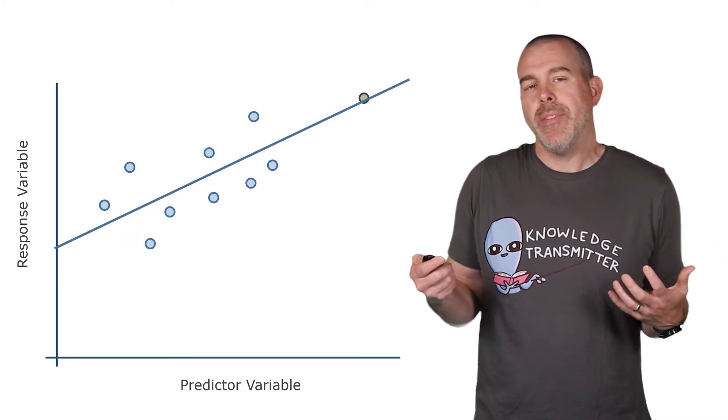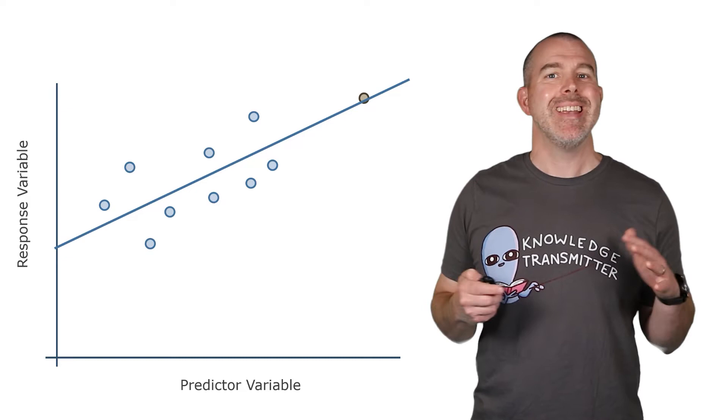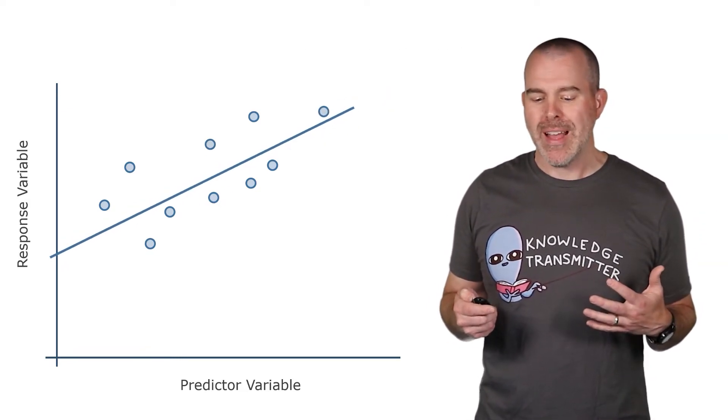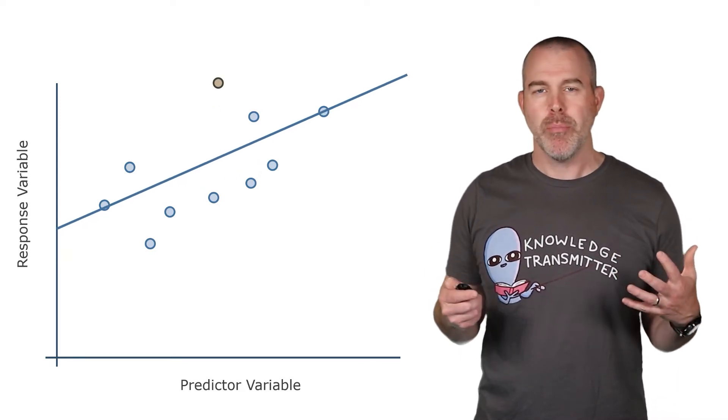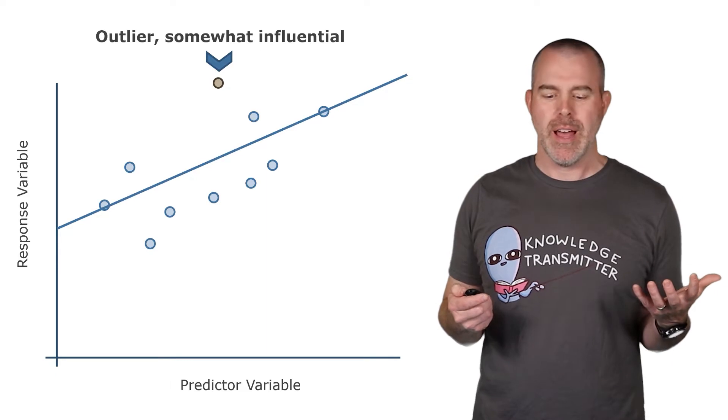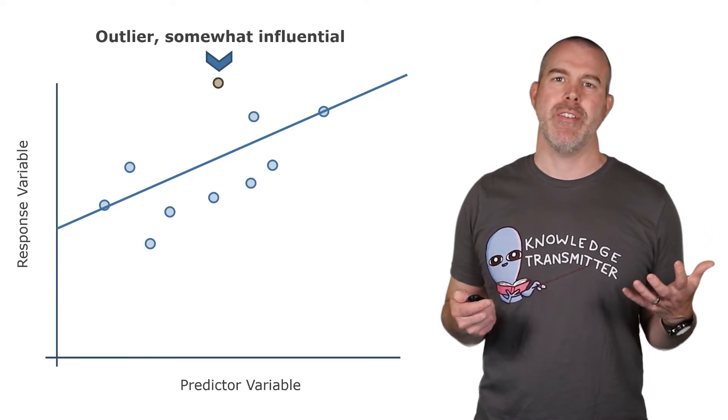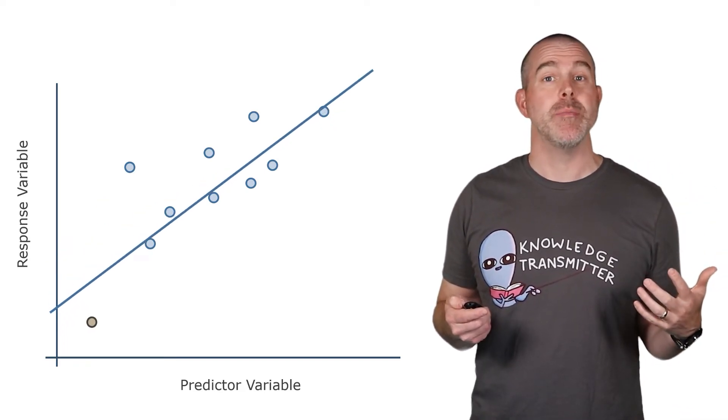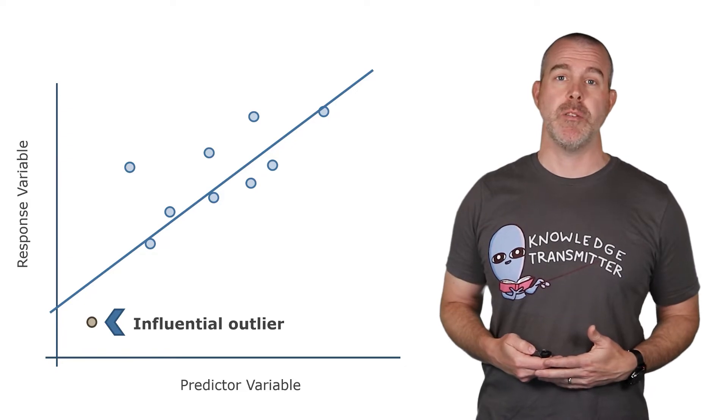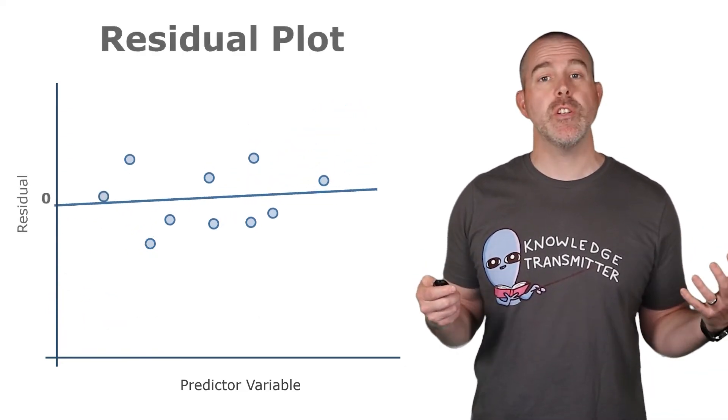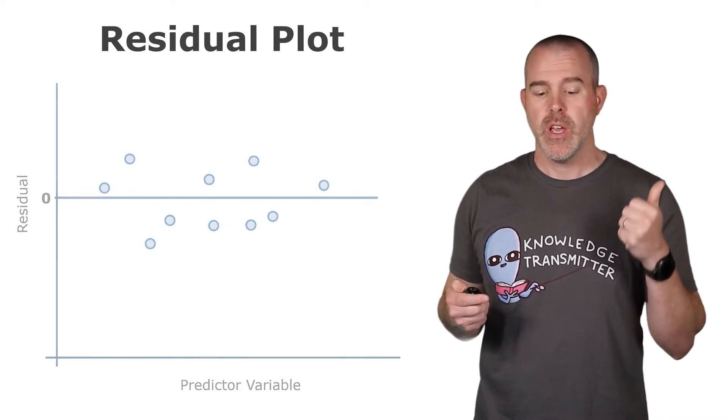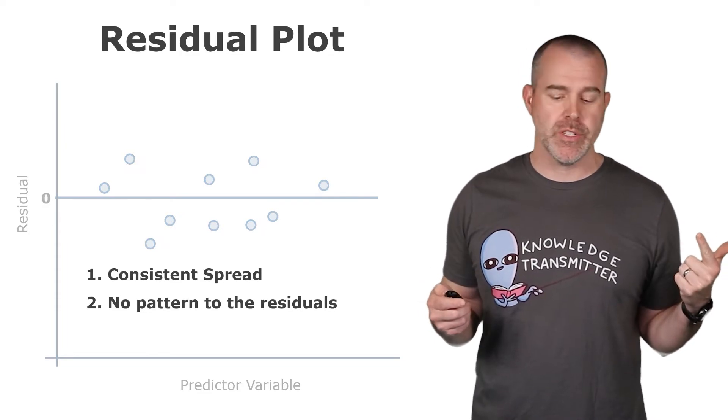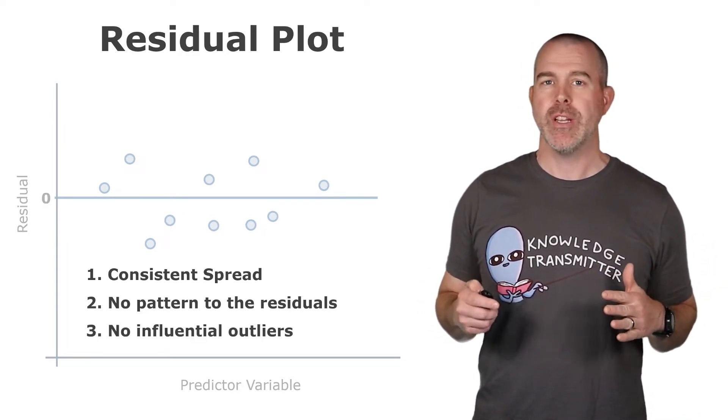The three cases we had: if we have one that's on the line, kind of in that direction, that's typically not influential. Outlier, but not influential. If we have one that's a big outlier, but it's got a bunch of other points near it, that's probably also outlier, maybe somewhat influential, but not significantly. The ones that are the riskiest are the ones that are outliers, but they're kind of off by themselves. Those are the ones that are most likely to be influential. For the residual plot, the three things we're looking for are: consistent spread, no pattern to the residuals, and no influential outliers.